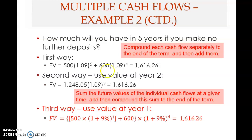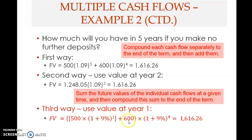There are actually many ways to solve this. A third method is to use the value at year one. Since five hundred is at the end of year zero, you can compound it to the end of year one, and then add the six hundred that arrives at year one — so they can be combined at that point.